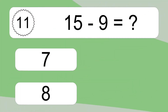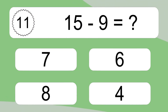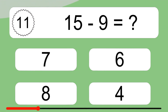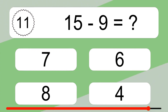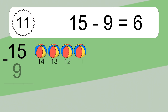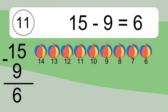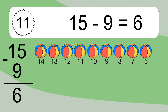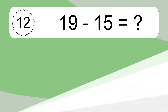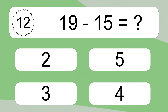15 minus 9 equals what? 15 minus 9 equals 6. Let's count it: 14, 13, 12, 11, 10, 9, 8, 7, 6.